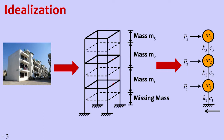At floor 3, since there is no upper floor, only half the column weight of floor 3, half the wall weight at floor 3, and the slab weight along with beam weights contribute. That divided by gravity gives mass 3. So M1, M2, M3 are the masses at individual floor levels.